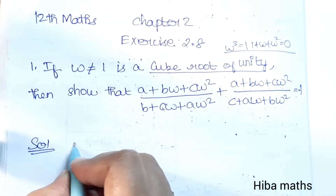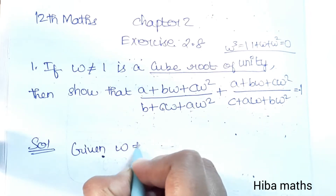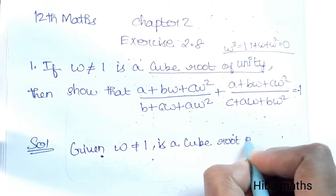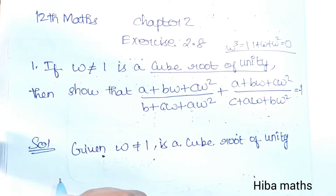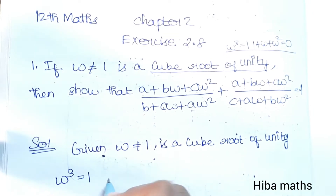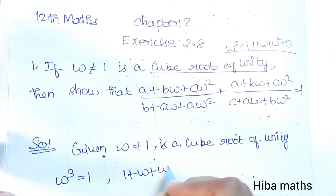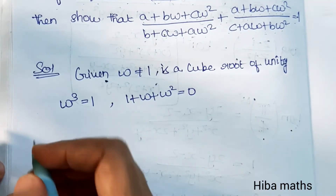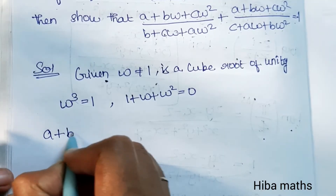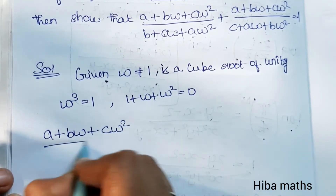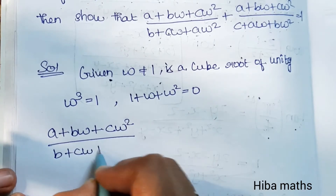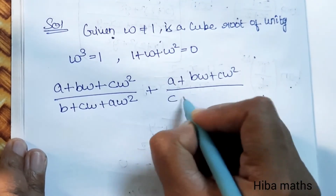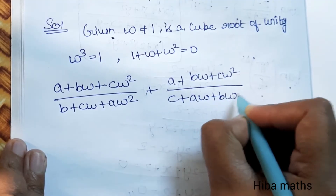In the solution, given omega is not equal to 1 and is a cube root of unity, so the conditions are omega cubed equals 1 and 1 plus omega plus omega squared equals 0. We need to prove: (A plus B·omega plus C·omega²) divided by (B plus C·omega plus A·omega²), plus (B·omega plus C·omega²) divided by (C plus A·omega plus B·omega²), equals minus 1.